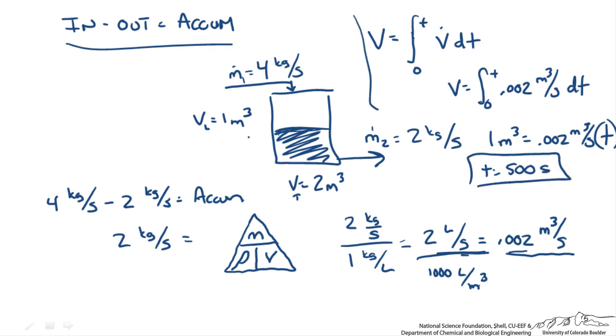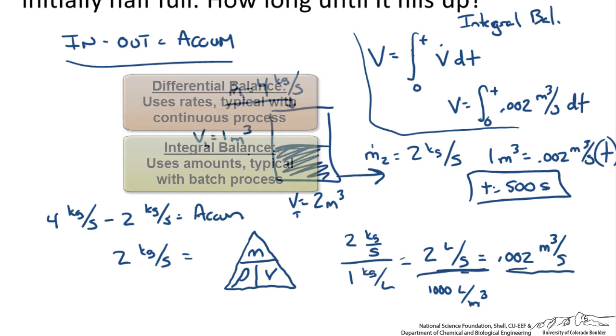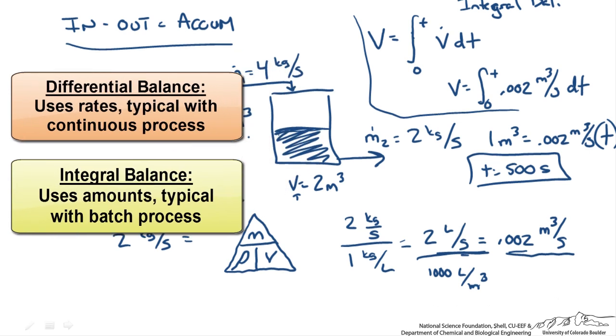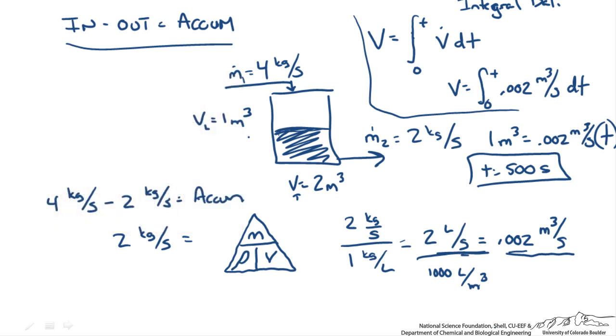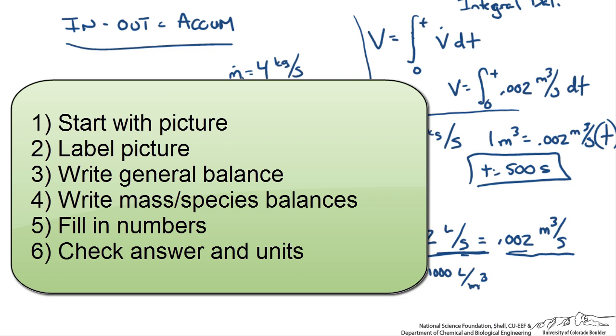So that is what is called an integral balance. If we were trying to figure out the rate instead, then we would probably perform what is known as a differential balance. That would give us some rate, allow us to do a balance equation to figure out the rate of input, the rate of generation, and so forth. So that is a very simple material balance.